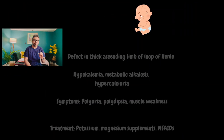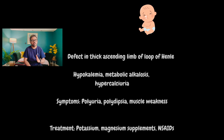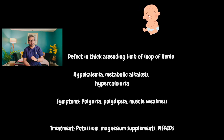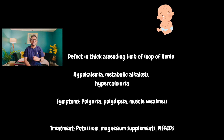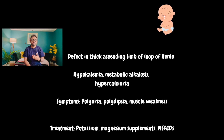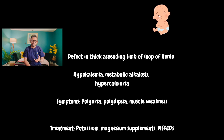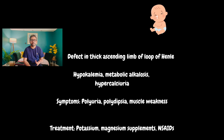Let's discuss another important topic — Bartter syndrome. In Bartter syndrome, the pathology lies in the thick ascending loop of Henle, and it is associated with hypokalemia, hypercalciuria, and metabolic alkalosis. They present with polydipsia, polyuria, and muscle weakness. Treatment is potassium and magnesium supplements, and NSAIDs.